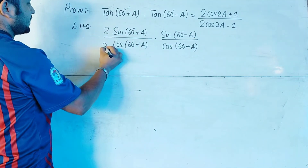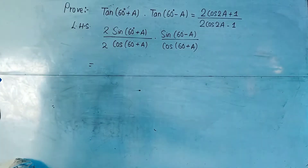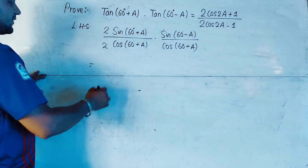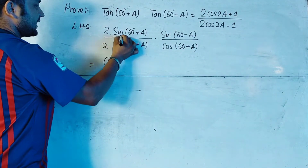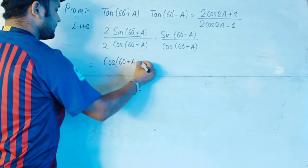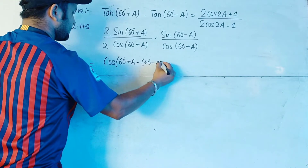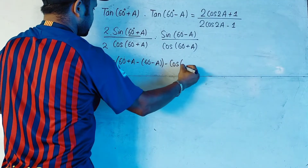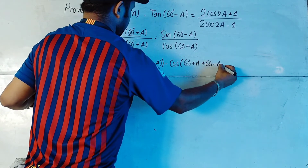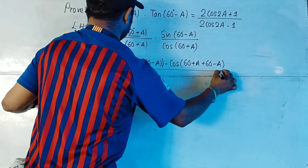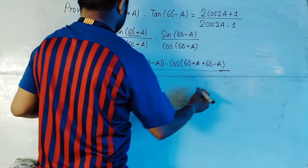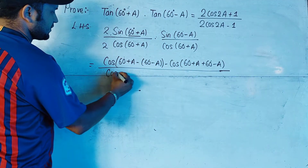Now we'll multiply the numerator and denominator by 2. When you multiply numerator and denominator by 2, the numerator will change into the form of 2sinA sinB. The formula is: 2sinA sinB equals cos(A-B) minus cos(A+B). So we use the formula of 2sinA sinB in the numerator.